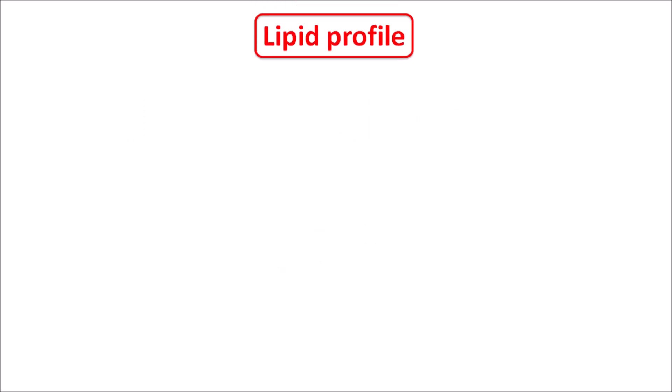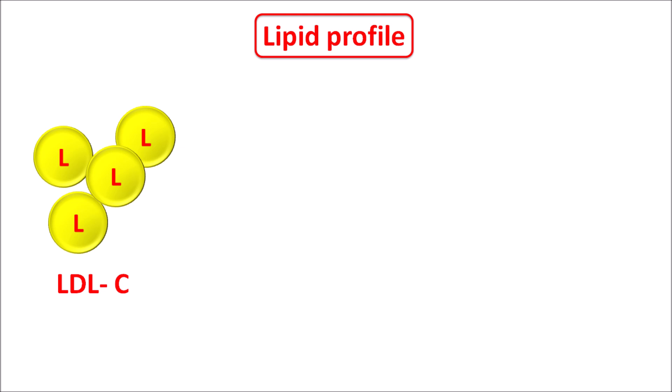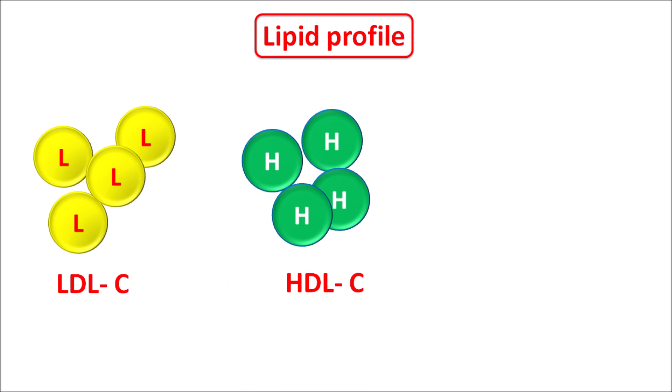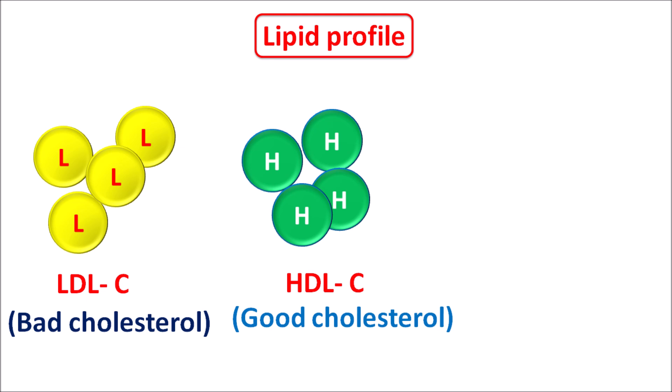The lipid profile, which is also called as lipid panel, is one of the important tests to assess the lipid levels within the serum. One of the important lipids is LDL cholesterol, and cholesterol is also available in another form, HDL cholesterol. LDL is the low density lipoprotein, which is the carrier for cholesterol, and HDL is the high density lipoprotein. LDL cholesterol is also called as bad cholesterol, whereas HDL cholesterol is considered as good cholesterol. In the lipid profile we can estimate the levels of both LDL and HDL cholesterol.